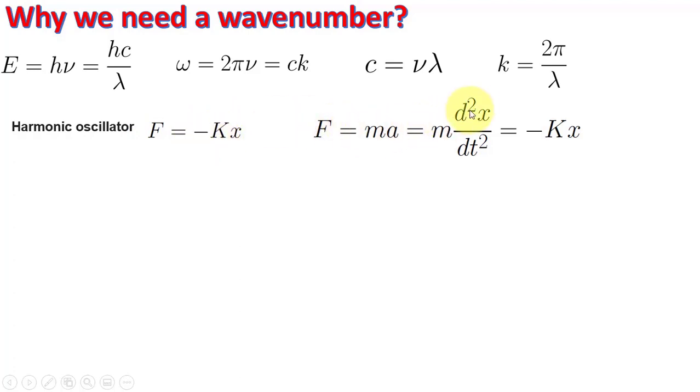We can write F equals ma, m d square x by dt square equals minus Kx, and from this we can derive that the frequency is equal to 1 over 2π times square root of K over m.